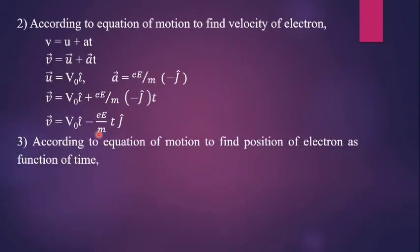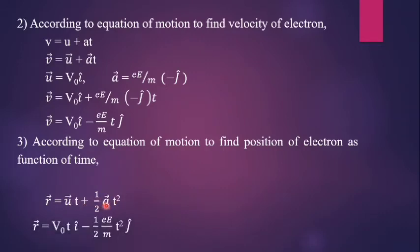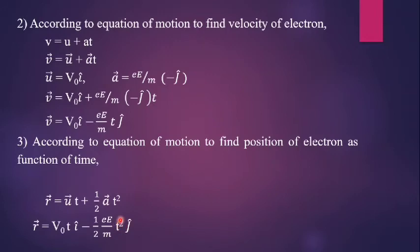Now we want to find the position of the electron as a function of time. Using the equation of motion r-vector equals u-vector t plus half a-vector t-squared. Substituting u-vector equals v0 i-cap and a-vector equals minus eE by m j-cap, the position of the electron becomes: r-vector equals v0 t i-cap minus half (eE by m) t-squared j-cap.